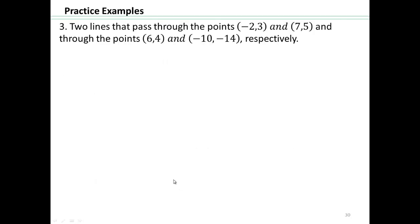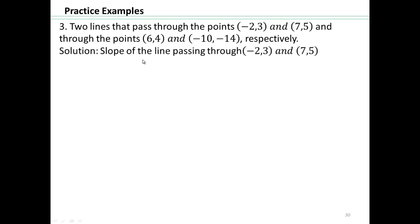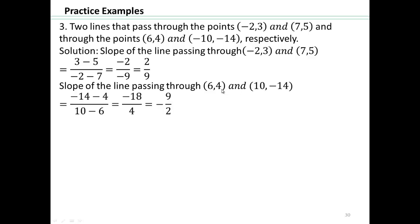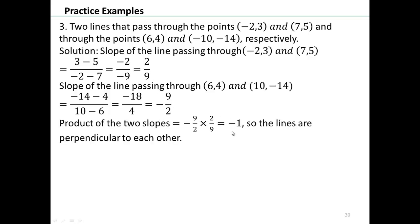Try this one on your own: two lines — the first passes through (negative 2, 3) and (7, 5), and the second goes through (6, 4) and (negative 10, negative 14). Remember, you have to find the slope of each and see if there's any relationship between them. The slope through the first two points gives you 2 ninths. The slope through the second two points gives you negative 9 halves. These two slopes are negative reciprocals of each other — their product is negative 1 — which means the lines are perpendicular to each other.